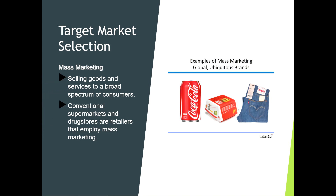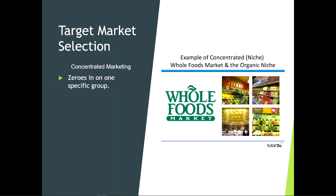Mass marketing involves selling goods and services to a broad spectrum of consumers; conventional supermarkets and drug stores are examples. Concentrated marketing is more of a niche approach — it zeros in on one specific group, such as a small-scale upscale men's shoe store. Niche markets are not necessarily small; for instance, the gaming hardware and accessories market — earphones and peripherals for gamers — represents billions of dollars.